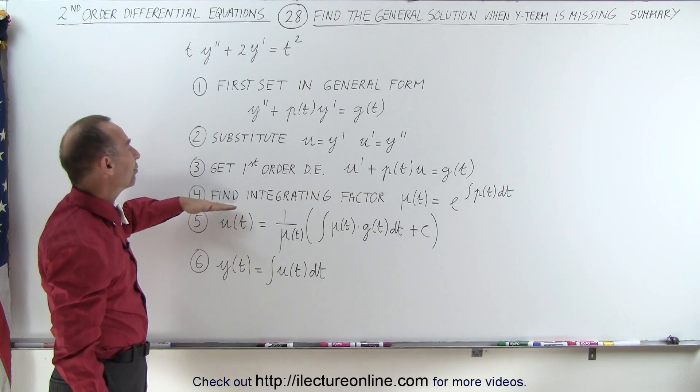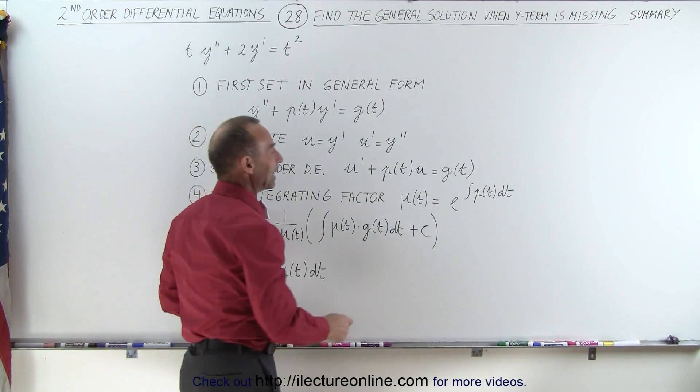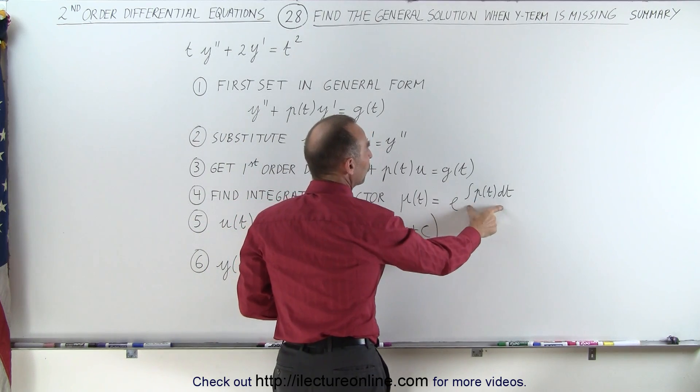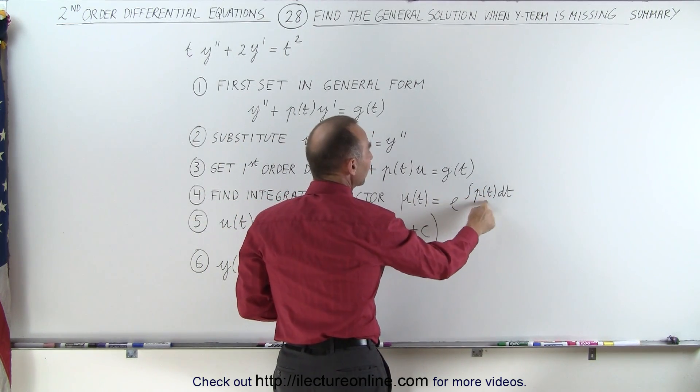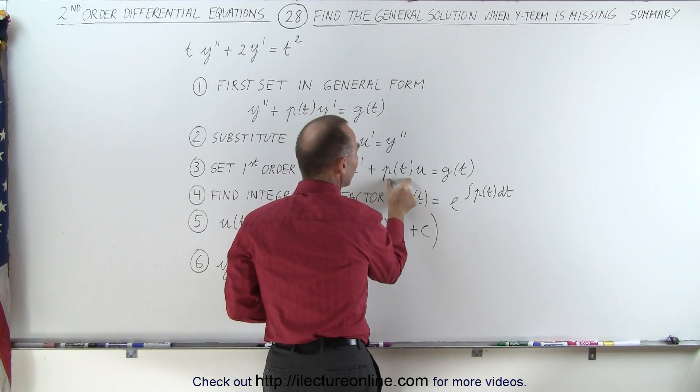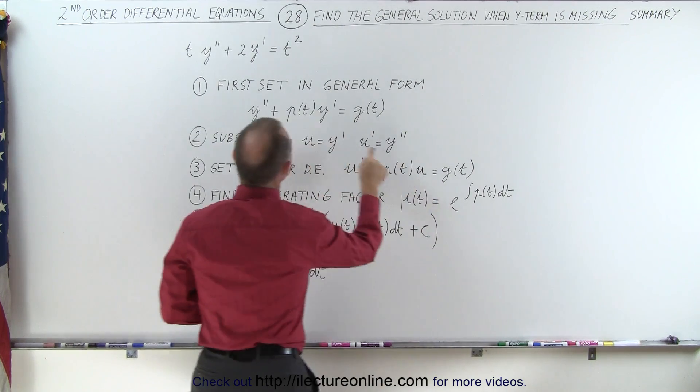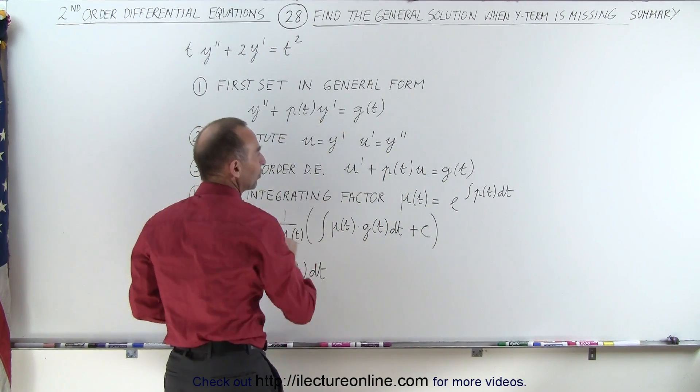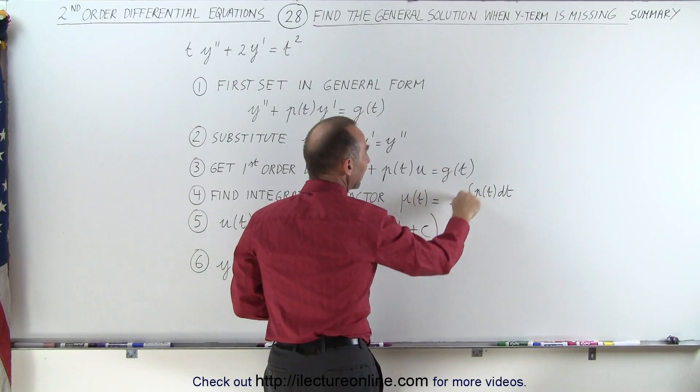The next thing we do is find the integrating factor, which is simply taking the exponent to be the integral of p of t dt. That's the coefficient in front of the u term, which used to be the coefficient in front of the y prime term. So we have e raised to the integral of that, and that gives us the integrating factor.